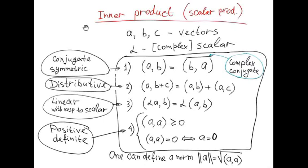In order to continue our exposition, let me remind you of the notion of inner product or scalar product in linear vector space. Let A, B and C be some vectors and alpha a complex scalar. Inner product is a mapping from a pair of vectors A and B to a complex scalar with the following four properties.